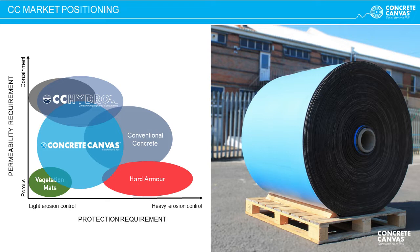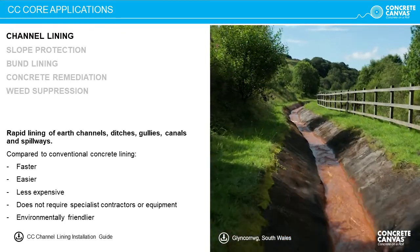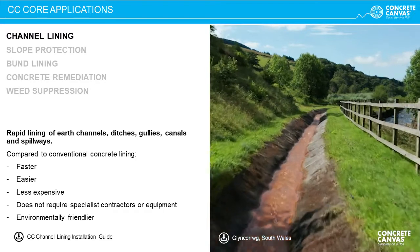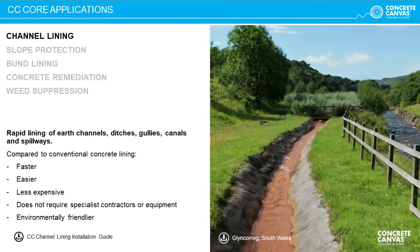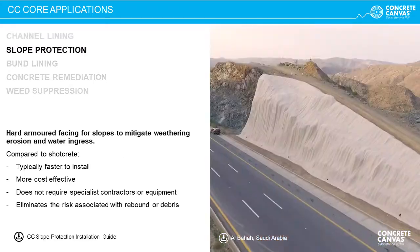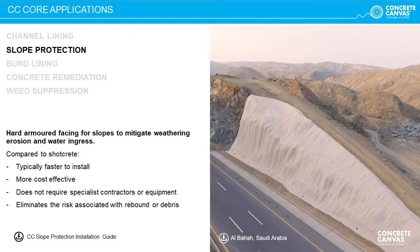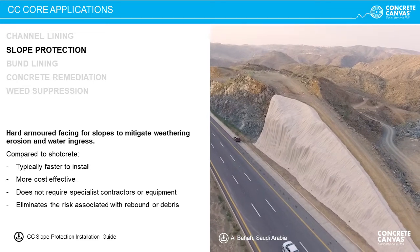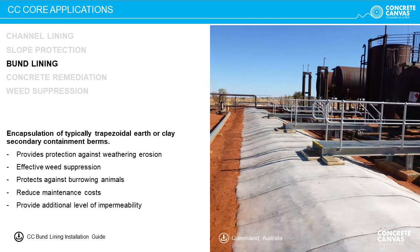In the decades since its initial conception, concrete canvas has established itself in five core applications. Its primary use is for the rapid lining of channels to provide erosion protection — quicker to install, more cost effective and environmentally friendlier compared to poured, sprayed or precast concrete options. Slope protection is another core application, providing a hard armoured facing to slopes to prevent erosion. It is important to note that CC does not provide slope stabilisation but is often used in conjunction with tensile meshes and soil nails. CC also has unique advantages over conventional solutions for bund lining.